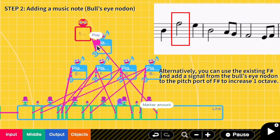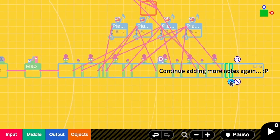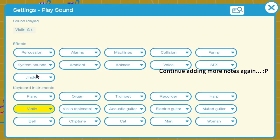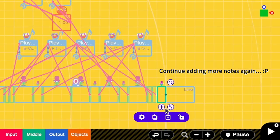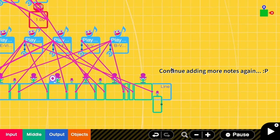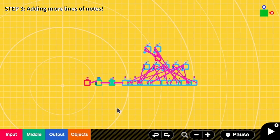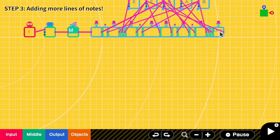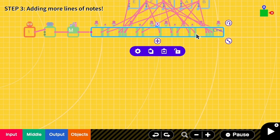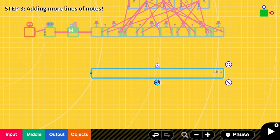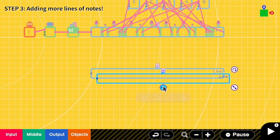Then let's say I need more lines of notes. For example, if I need three, I need to copy this marker nodon. Let's say that I need three of them.